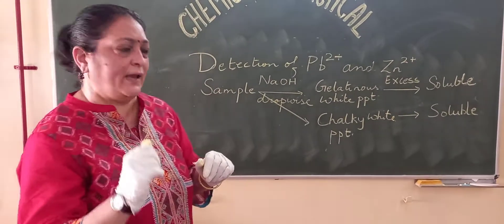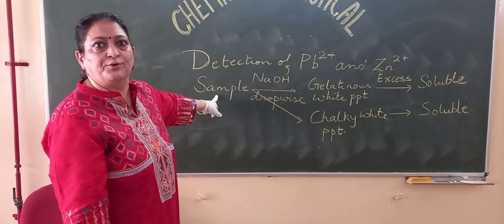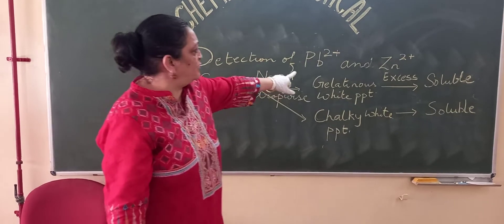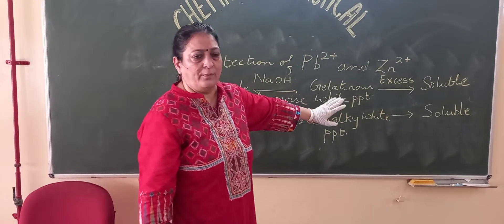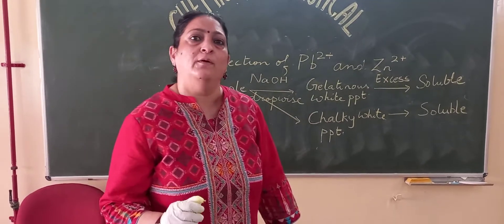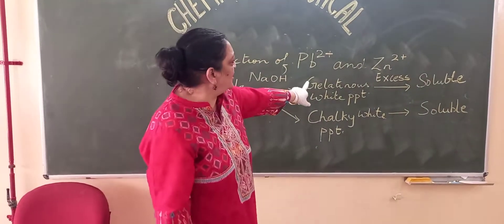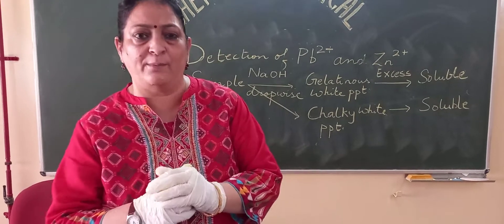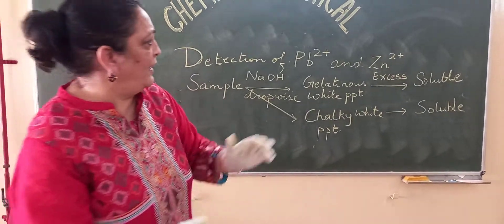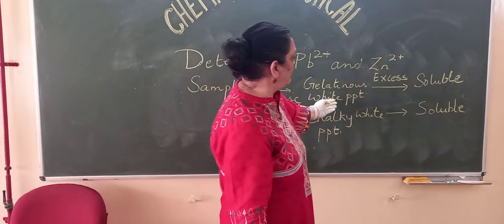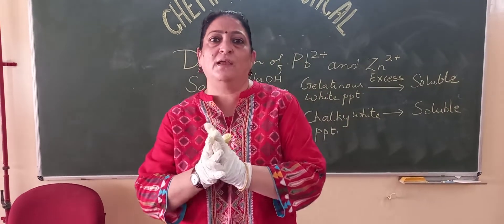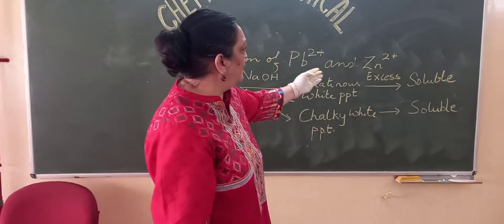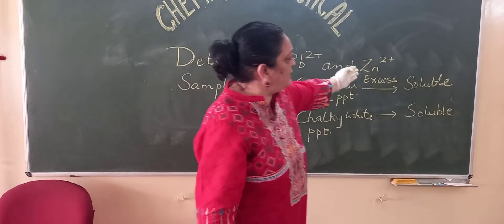If we do the test with NaOH and add it drop by drop to the sample, the observation we will get is a gelatinous white precipitate. When we then add excess NH4OH to this gelatinous white precipitate, our observation will be that the white precipitate becomes soluble.